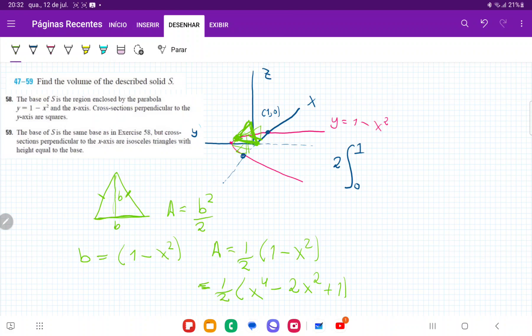So now that we have this, let us integrate it. So I'm going to put that in. That's 1 half times x to the power of 4 minus 2x squared plus 1 dx.